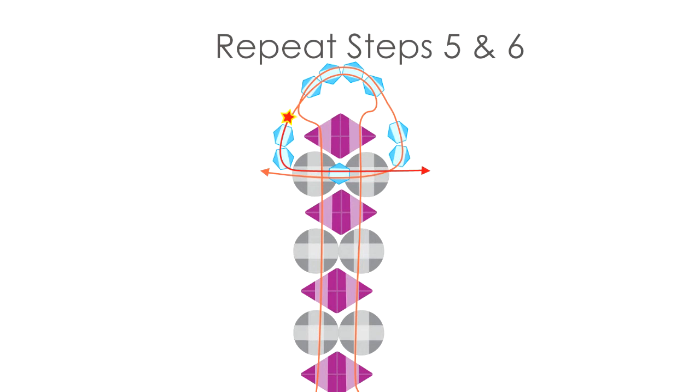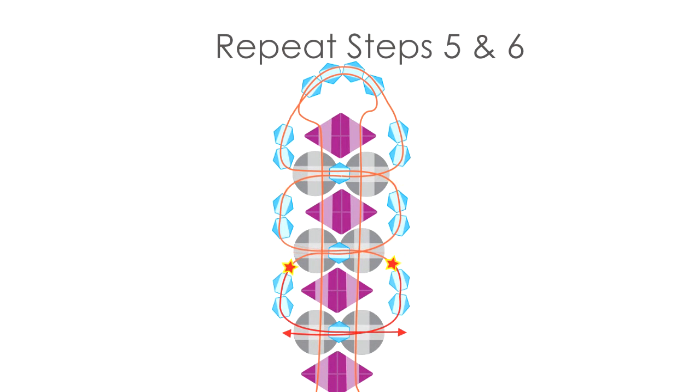Now just repeat steps 5 and 6 until you have added the rest of the 2 tinies, crossing the threads with the Rosemontes and you have beaded the entire bracelet back to the original seed bead loop that is closest to you.